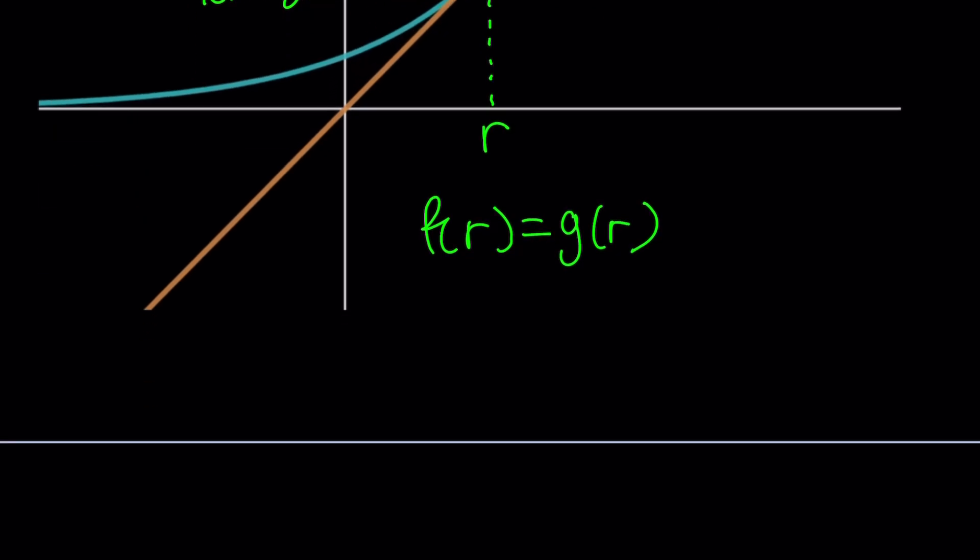Okay, so in other words, in calculus, it means f prime of r equals g prime of r, because f prime at r gives you the slope of the tangent at r. So we're going to solve a system. Let's do it.